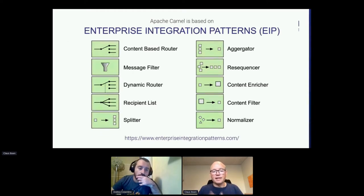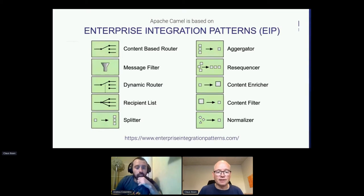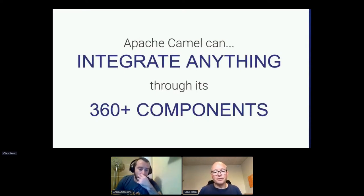We have a standard set of vocabulary from these patterns. When we call something a content-based router, a message filter, a dynamic router, and so on, that's the common language. Camel is software that comes with all these patterns out of the box, so you can use them.